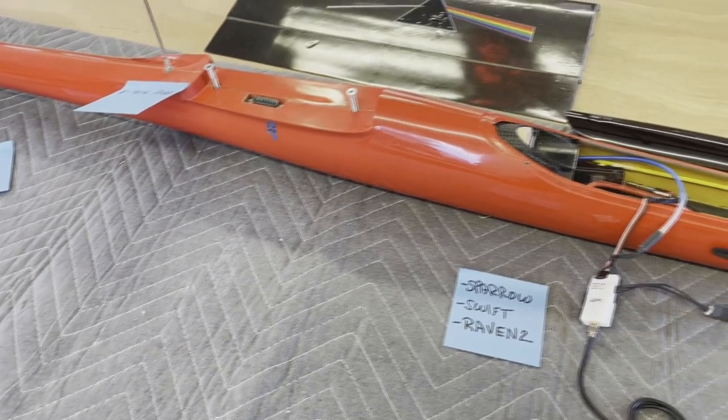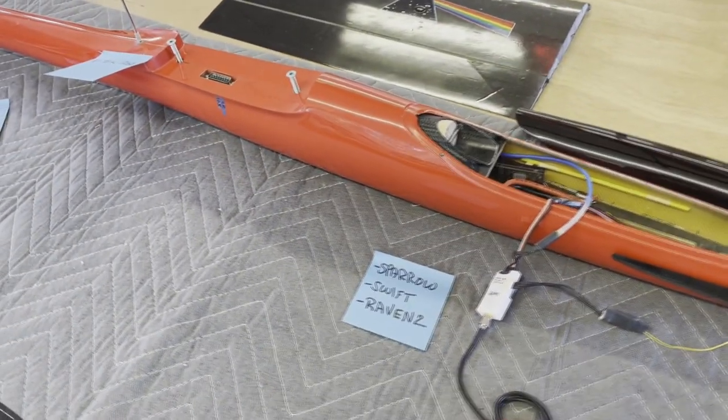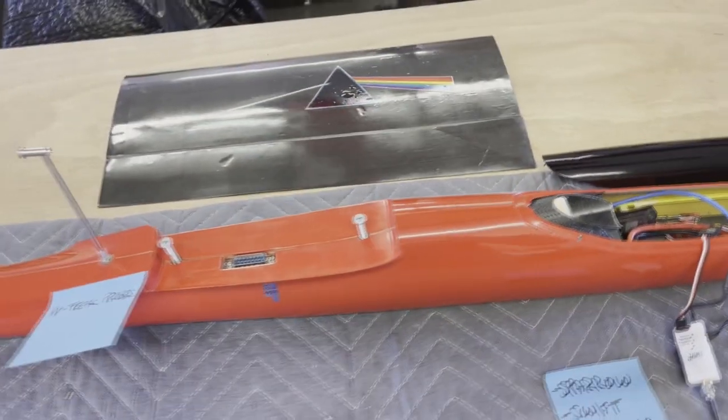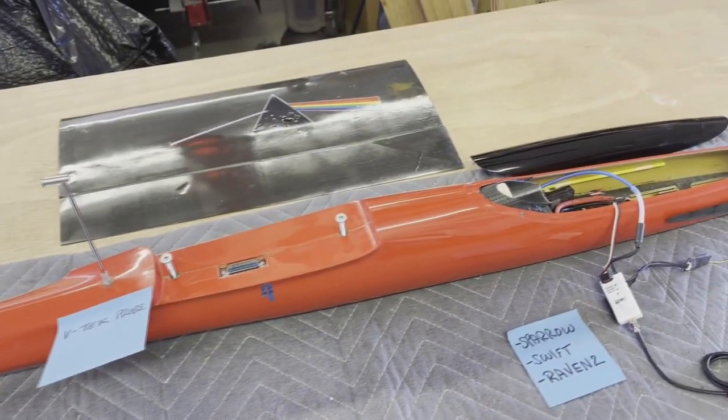So when you have the app up and running, you could go from thermal page to glide page or start page. And there's all different types of information you can get on those pages to look at.